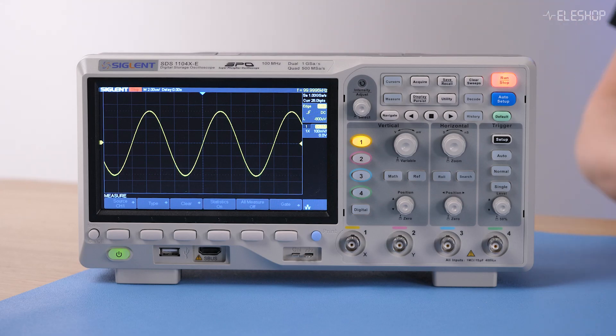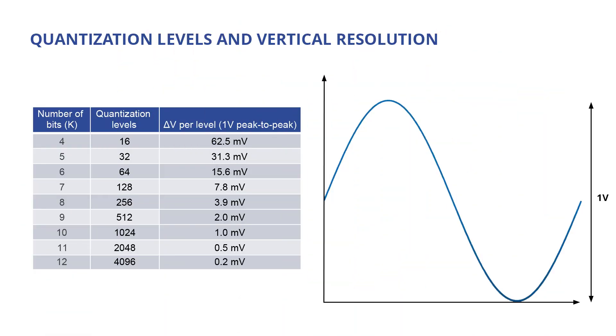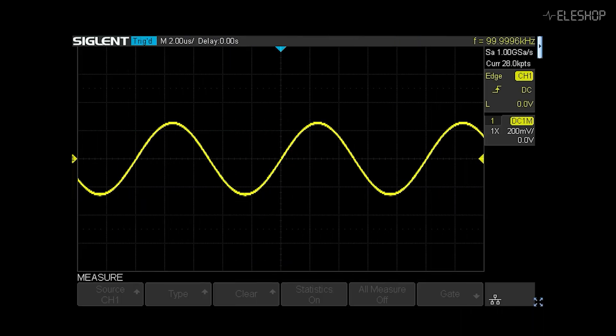For many years, 8-bit oscilloscopes have been the standard. Higher resolution oscilloscopes were expensive specialty tools. As you can see, the signal looks good on this 8-bit oscilloscope. The 8-bit ADC provides 256 discrete levels across the full scale. For the 1-volt signal shown here, each level is 3.9 millivolts — small enough that you cannot distinguish the individual discrete levels.